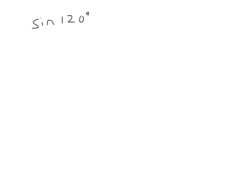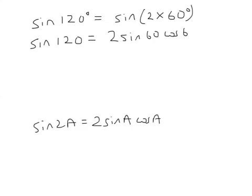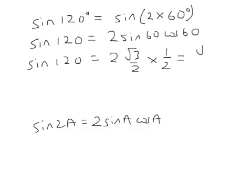So let's have a look at the sine of 120 degrees. That's the sine of 2 times 60 degrees. The sine of 2A, remember, is 2 sine A cos A. So this is 2 sine 60 cos 60. Therefore, the sine of 120 is 2 times the sine of 60 times cos 60, which is root 3 over 2, because 2 divided by 2 is 1.